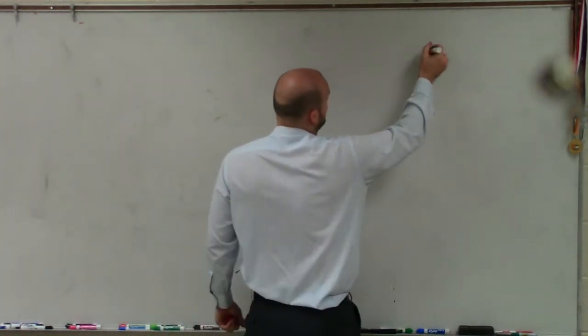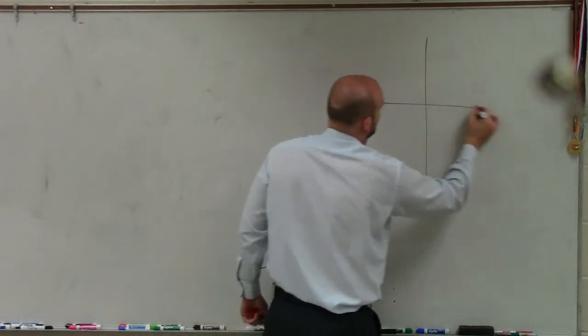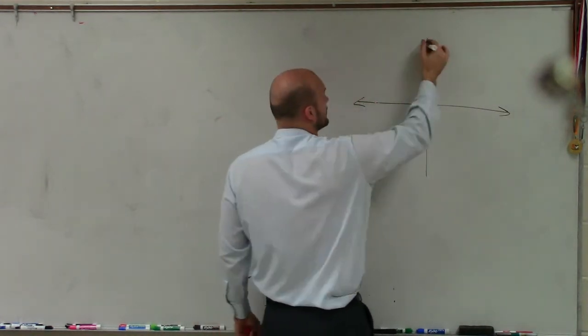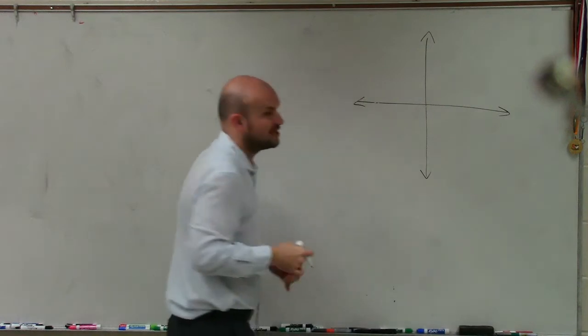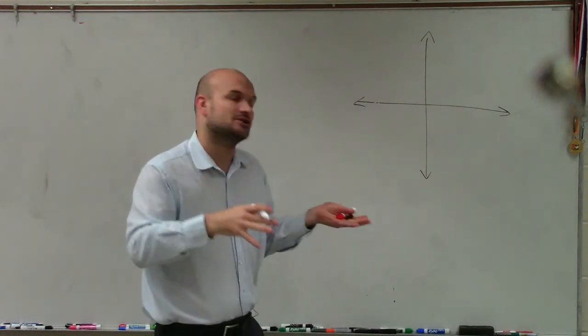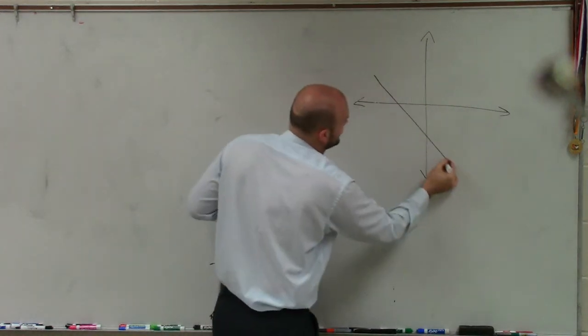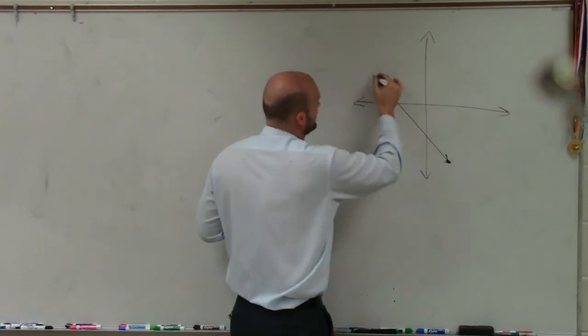So remember, if we're talking about a vector, a vector on our Cartesian coordinate grid could really just be anywhere as long as it has an initial point and a terminal point. So let's just kind of have a vector here, looks something like this.